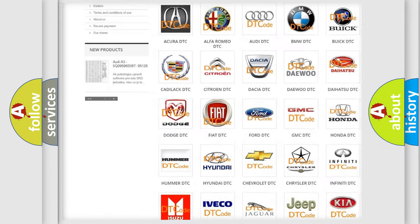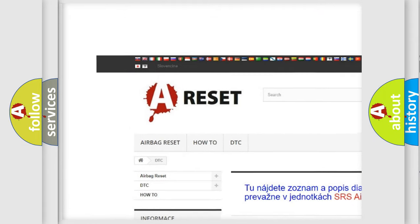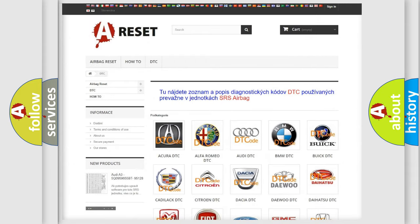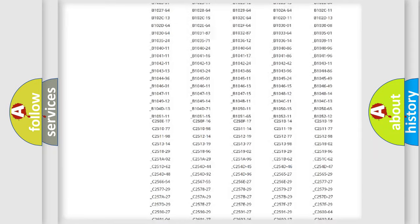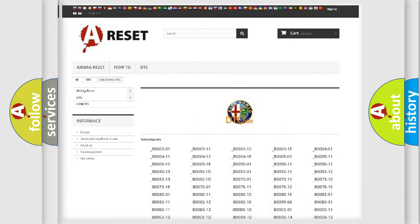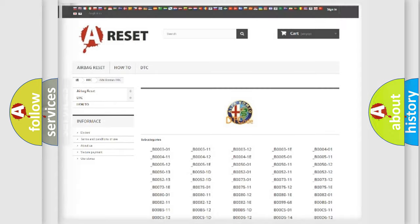Our website airbagreset.sk produces useful videos for you. You do not have to go through the OBD2 protocol anymore to know how to troubleshoot any car breakdown. You will find all the diagnostic codes that can be diagnosed in Alfa Romeo vehicles, and many other useful things.